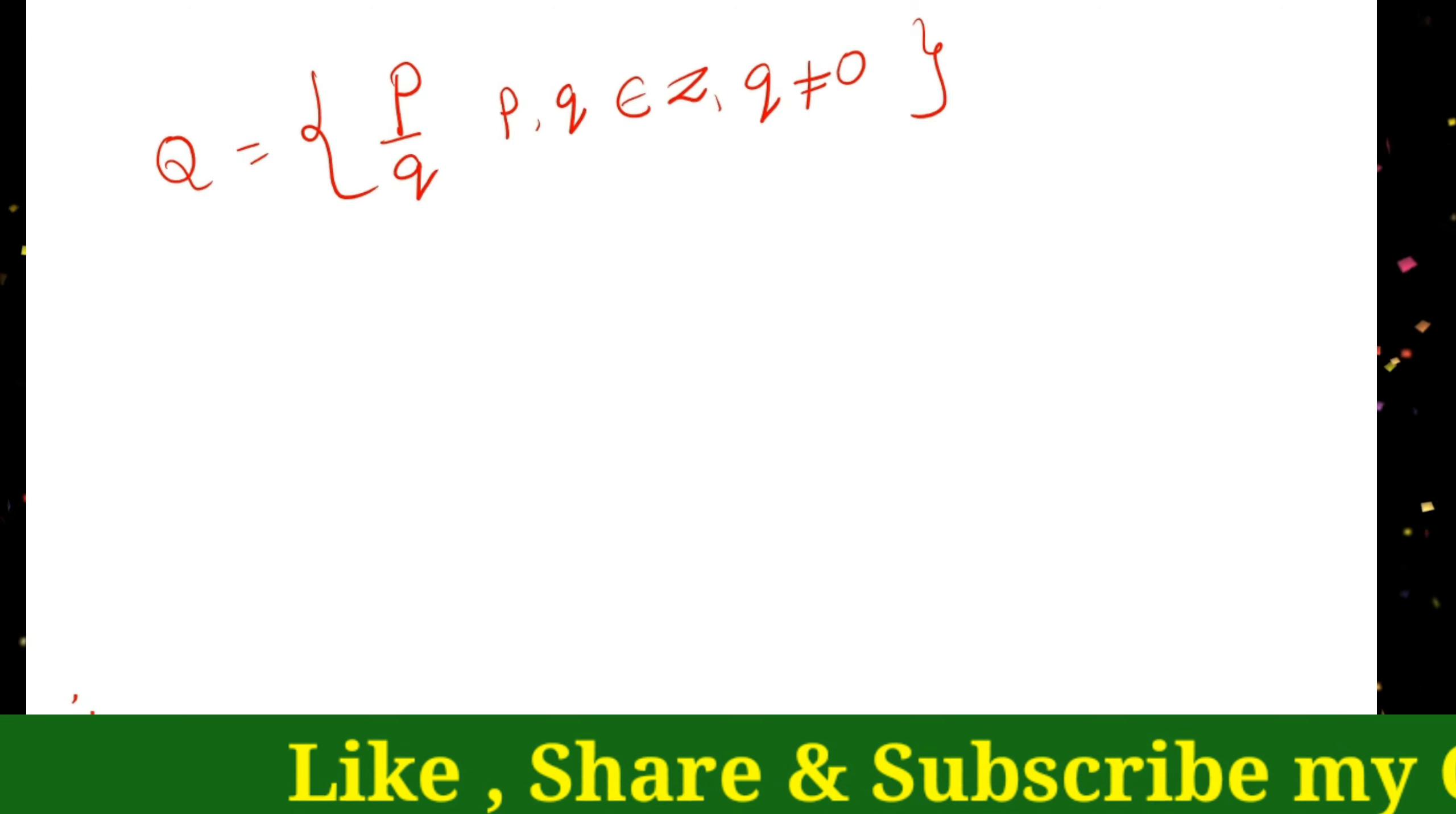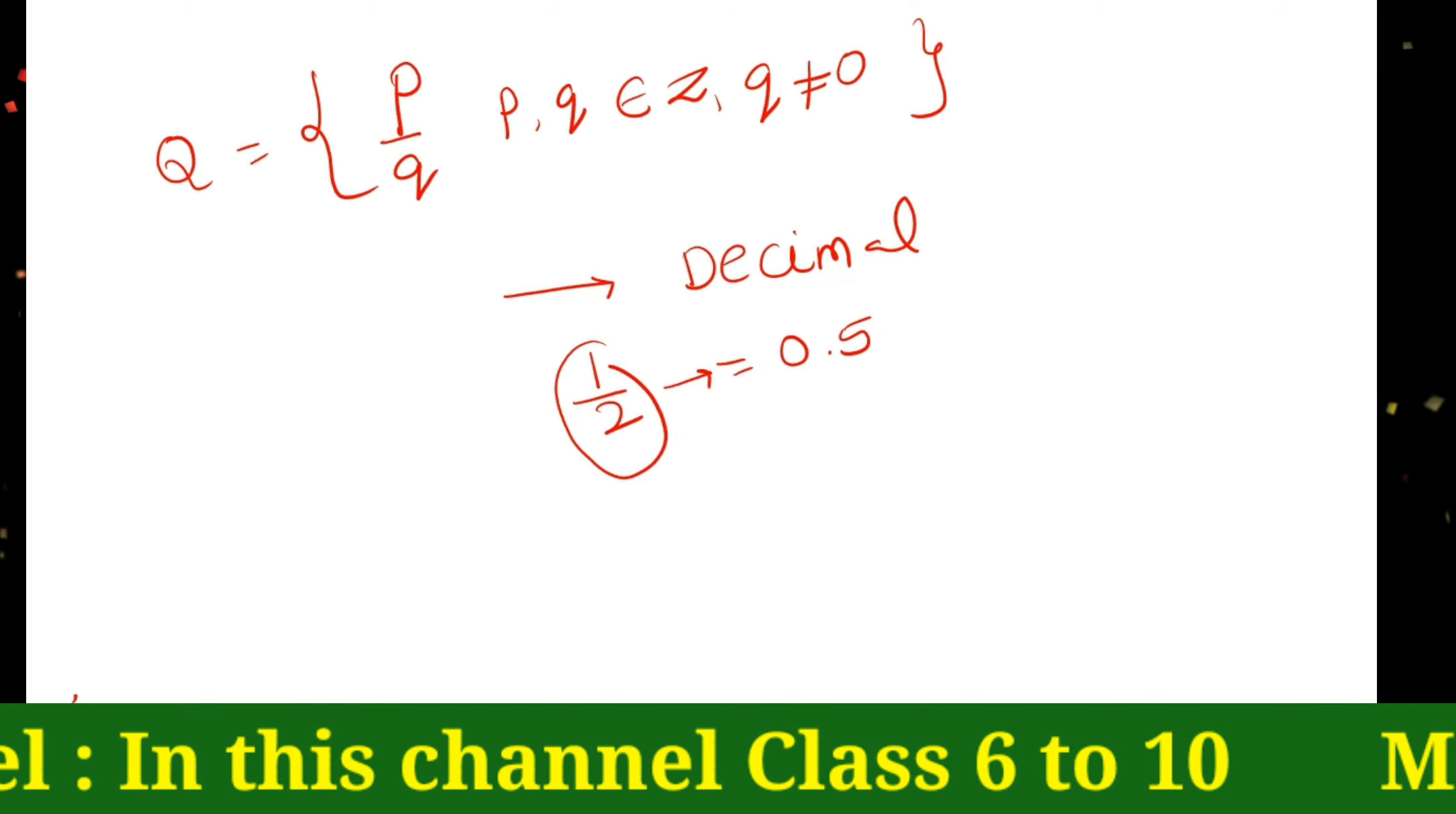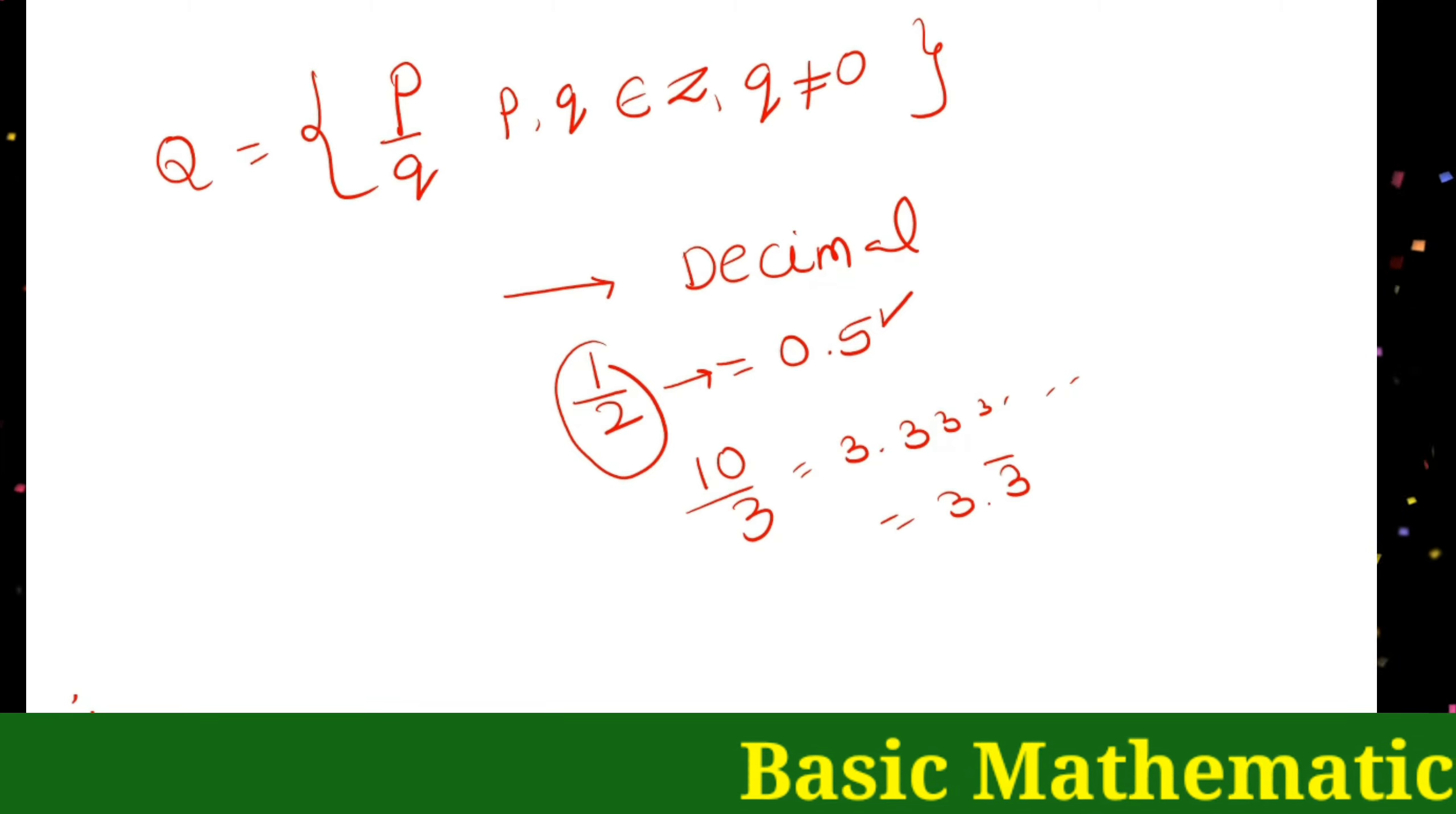All rational numbers are denoted by Q, where Q equals p by q, p and q belong to Z, and q not equal to 0. Every rational number can be expressed in decimal form. There are two types of decimals: terminating decimals and non-terminating recurring decimals. For example, 1 by 2 equals 0.5, which is a terminating decimal. 10 by 3 equals 3.333 continuous, which is a non-terminating recurring decimal.